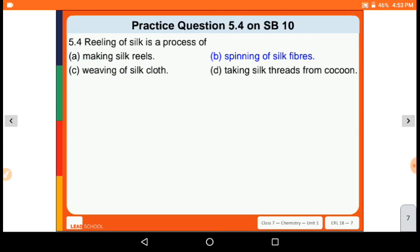Last question 5.4 on SB 10: reeling of silk is a process of (a) making silk reels, (b) spinning of silk fibers, (c) weaving of silk cloth, (d) taking silk threads from cocoons. The correct option is B, spinning of silk fibers.